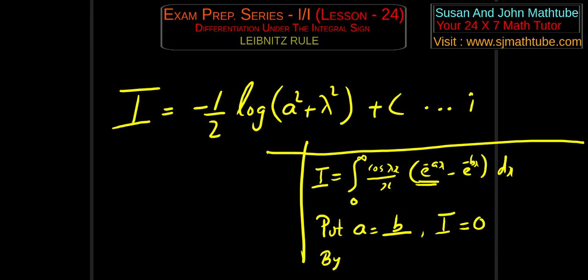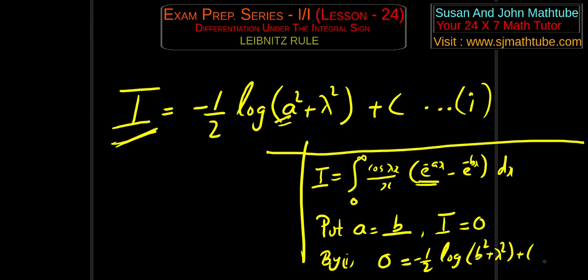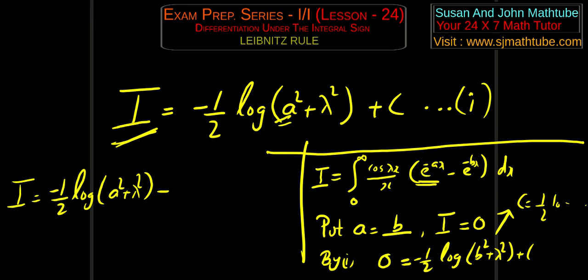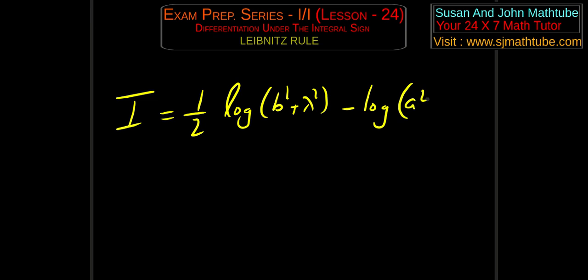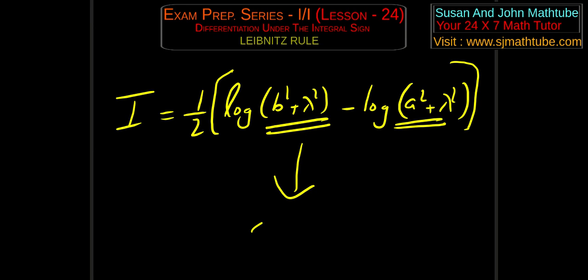I put a equal to b, I equal to 0, and use equation 1. So 0 equals minus 1 by 2 log of b squared plus lambda squared plus c. Therefore c equals 1 by 2 log of b squared plus lambda squared. Substituting everything: minus 1 by 2 log of a squared plus lambda squared plus 1 by 2 log of b squared plus lambda squared. Now 1 by 2 comes common, and we get log of b squared plus lambda squared minus log of a squared plus lambda squared, times 1 by 2. And log a minus log b equals log a by b. That is it.